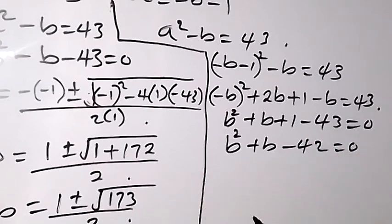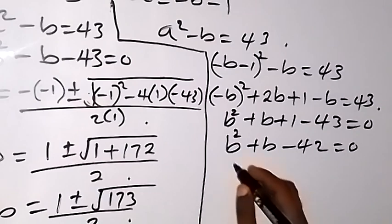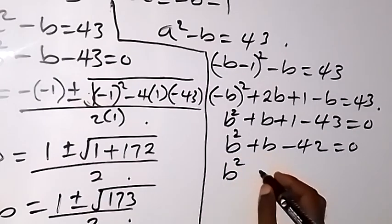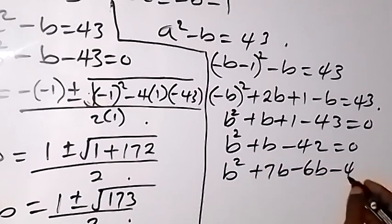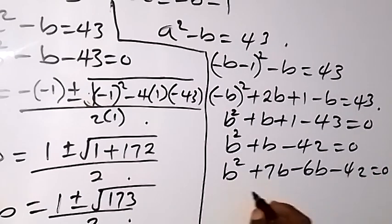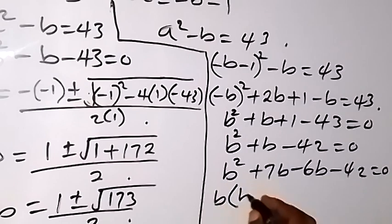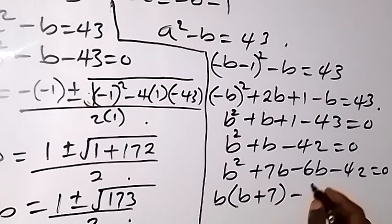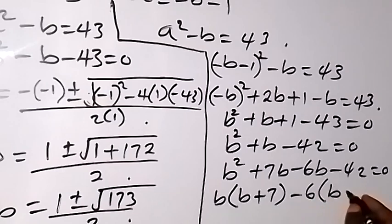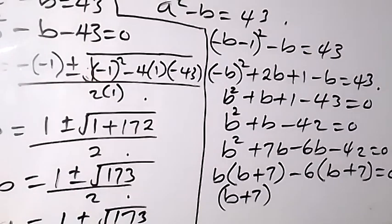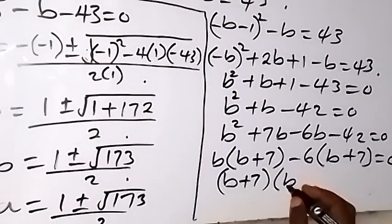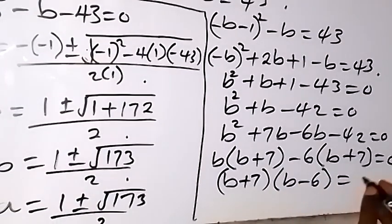This is a quadratic equation we can factorize. We have b squared plus 7b minus 6b minus 42 equals 0. Grouping: b times b plus 7, minus 6 times b plus 7, equals 0. Taking b plus 7 as common: b plus 7, times b minus 6, equals 0.